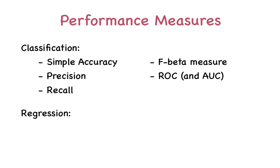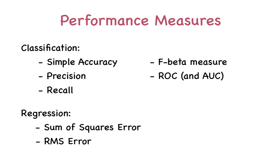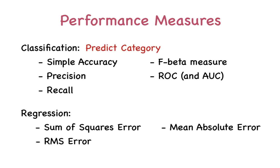In the case of regression, we could talk about the sum of squares error, the root mean squared error, the mean absolute error, and so on. I go into more detail about classification and regression in my introduction to machine learning video. For now, just understand that classification involves determining the category of a sample, while regression involves predicting the value of a sample.